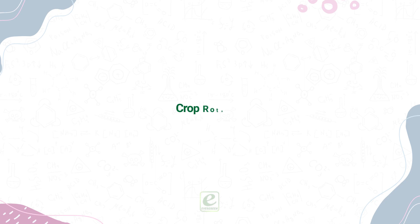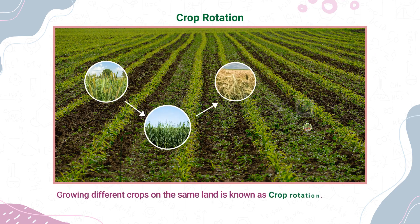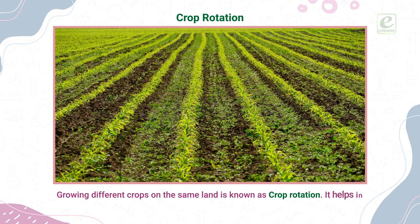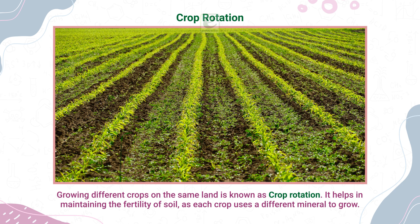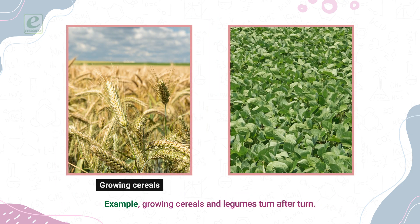Crop Rotation. Growing different crops on the same land is known as crop rotation. It helps in maintaining the fertility of soil as each crop uses a different mineral to grow. Example: growing cereals and legumes turn after turn.